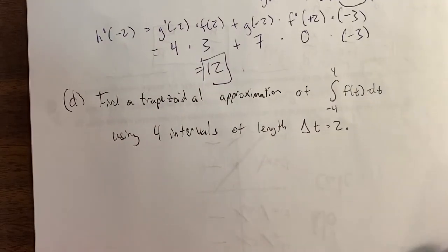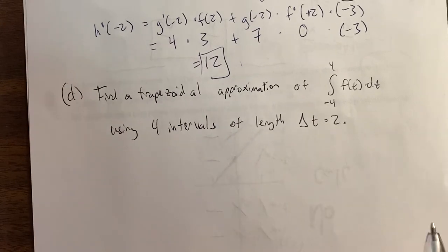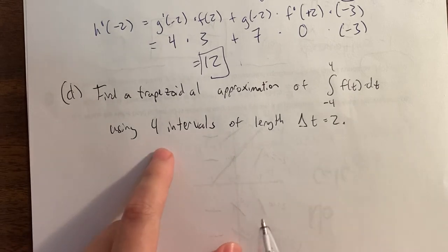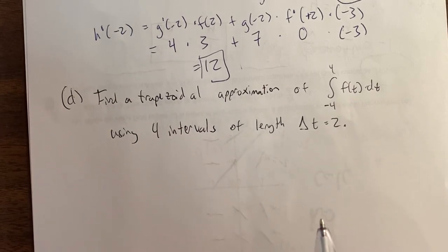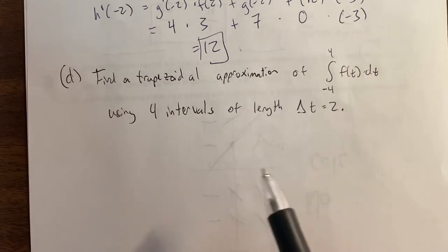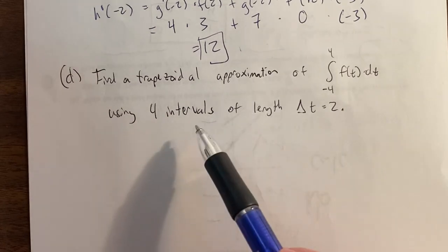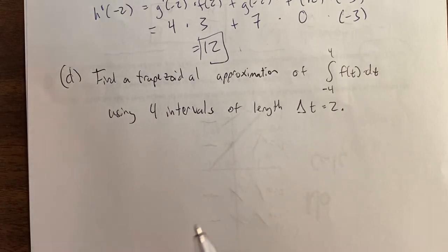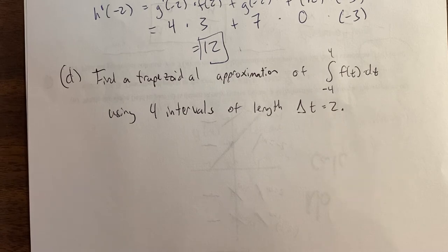Why this question is harder than difficulty 2: we threw in a Riemann sum — specifically a trapezoidal Riemann sum. Remember there are four types: left, right, midpoint, and trapezoidal. Simpson's rule exists at college level but is not covered on AP AB or BC as of 2020. Usually Riemann sums appear in tabular free response questions, not graph questions, so if you want lots of Riemann sum practice, check out our table free response video series.